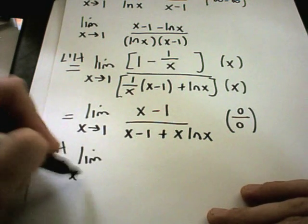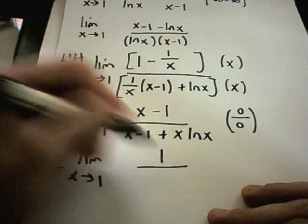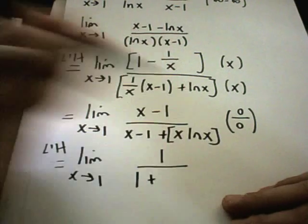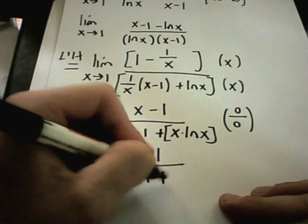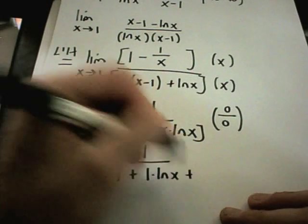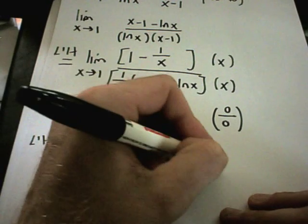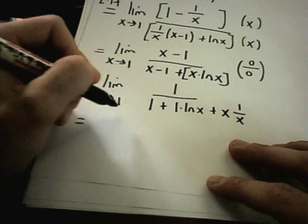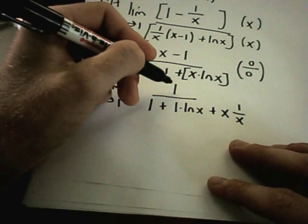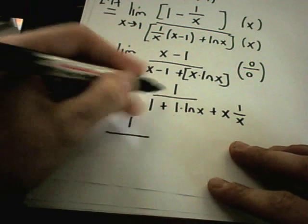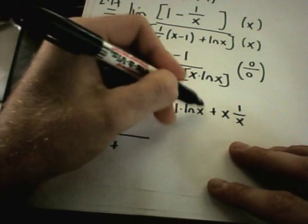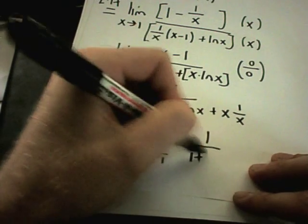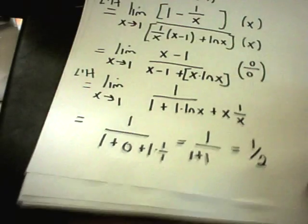Taking the limit as x approaches 1: the derivative of the top is just 1. On the bottom, using the product rule on x times ln(x), the derivative of x is 1 times ln(x), plus x times the derivative of ln(x) which is 1 over x. Simplifying, I have 1 on top and 1 plus ln(1) plus 1 times 1 over 1 on the bottom. Since ln(1) is 0, that's 1 over 1 plus 1, or one half — that's the answer.